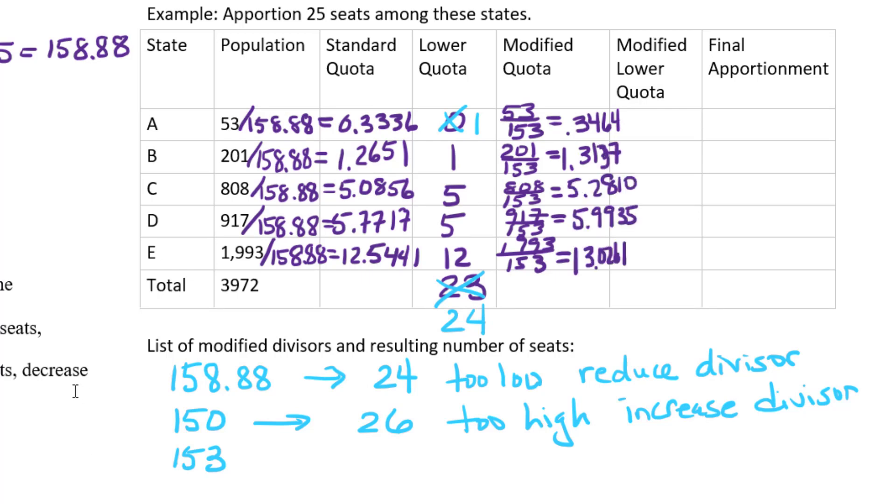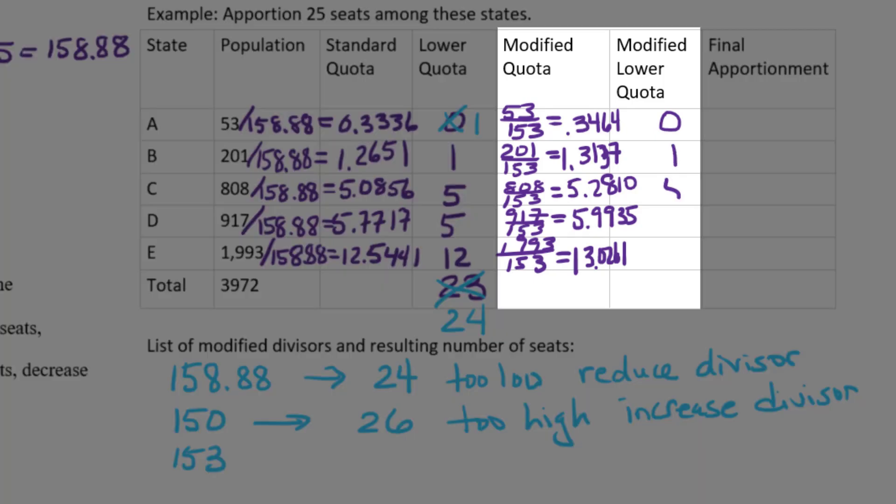And that completes step two again, and now we're going to do step three. We're going to write down each state's modified lower quota. So that's going to be 0, 1, 5, 5, and 13.